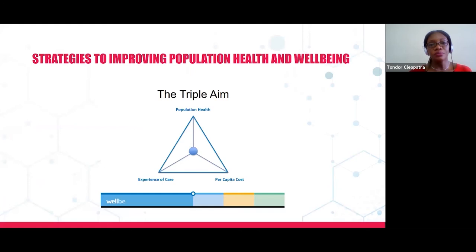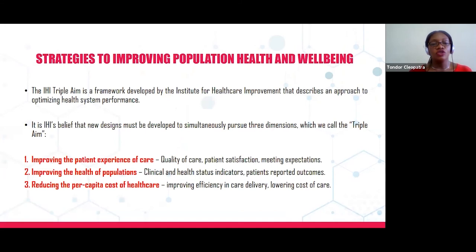Let's take a look at some strategies for improving population health and well-being. The Institute for Healthcare Improvement put forward the Triple Aim approach. It looks at improving population health at the top, improving the experience of patients when they access healthcare on the left, and reducing the per capita cost of healthcare services. As part of improving the patient experience of care, we have to look at the quality of care.